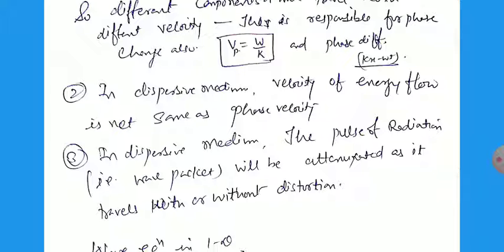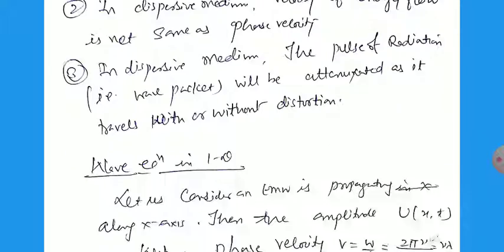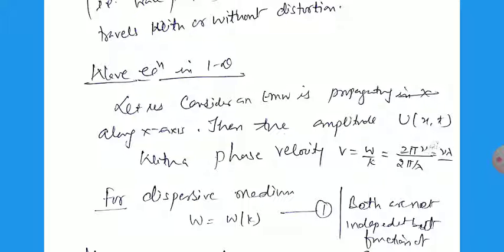So the group of waves moves with different velocities because some part of the wave moves with smaller velocity and other parts move with larger velocity. For the group, it is not possible for the energy to flow at the same velocity as the phase velocity. The third point: in a dispersive medium, the pulse of radiation — that is, the wave packet — will be attenuated as it travels, or it can move without distortion or change in width by the media. Now, let us consider the electromagnetic wave propagating along the plus-x direction, with amplitude u(x,t) and phase velocity v equal to omega by k, which equals nu times lambda.